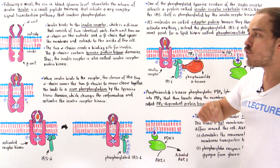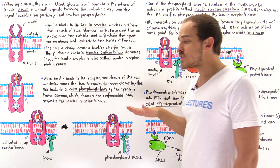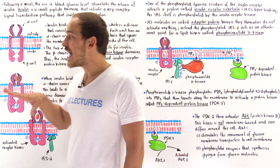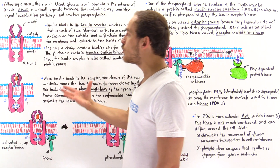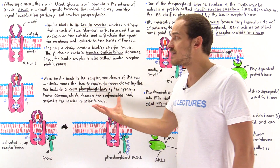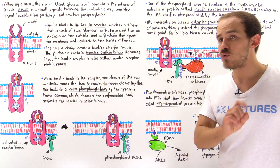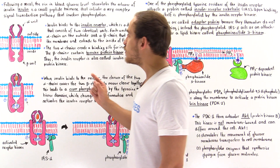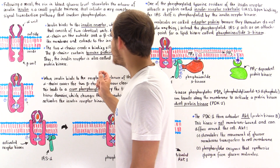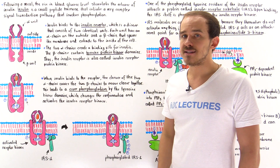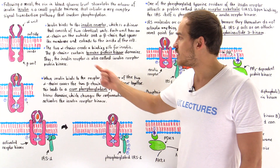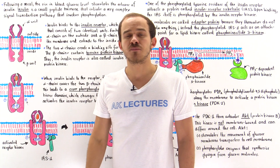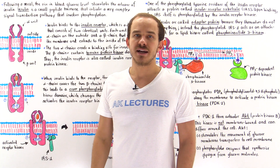The major difference between the insulin signal transduction pathway and the pathways discussed previously is that the insulin pathway involves a protein kinase present in the actual structure of the receptor. Before, we only focused on G-protein coupled receptors, but now we see that other receptors exist that don't use G proteins — instead they use protein kinases, and in this particular case it's a tyrosine protein kinase.